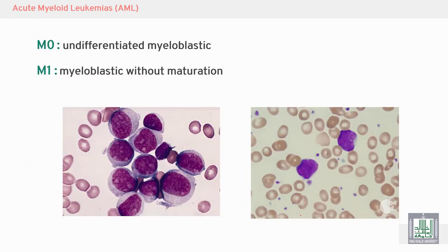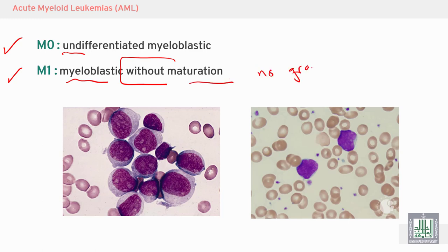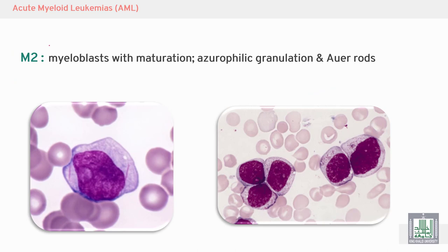M0 is undifferentiated myeloid leukemia. M1 is myeloid leukemia without maturation — no granules are seen.